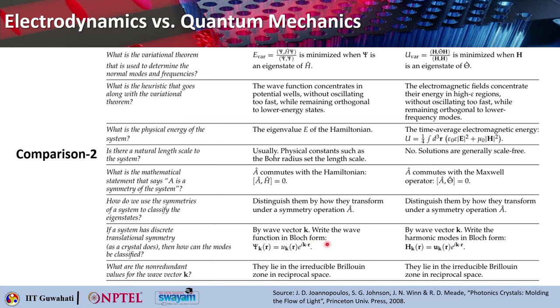If A is a symmetry of the system, A_cap commutes with the Hamiltonian in QM (their commutator equals zero), and A commutes with the Maxwell operator in electrodynamics. Eigenstates are classified by how they transform under a symmetry operation A_cap. If the system has discrete translational symmetry, modes can be classified by wave vector k, writing the wave function in Bloch form: psi_k(r) = u_k(r) * e^(i*k*r) in QM, and the harmonic modes as H_k(r) = u_k(r) * e^(i*k*r) in electrodynamics. The non-redundant values of wave vector k lie in the irreducible Brillouin zone in reciprocal space.